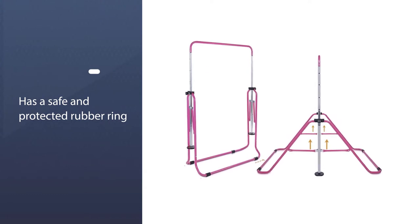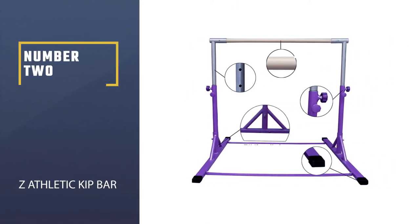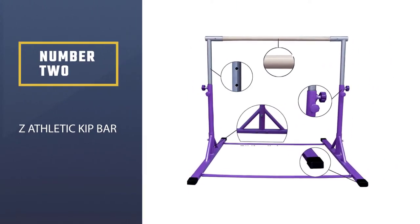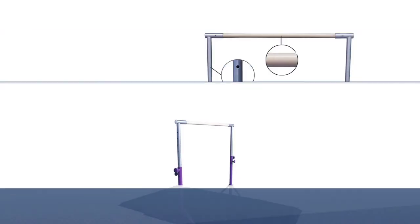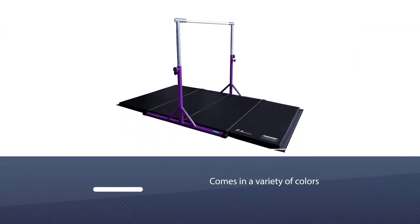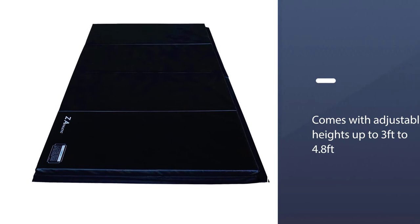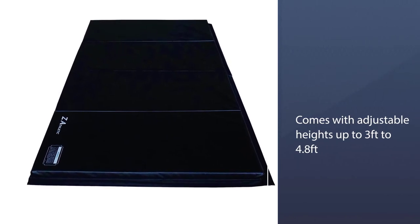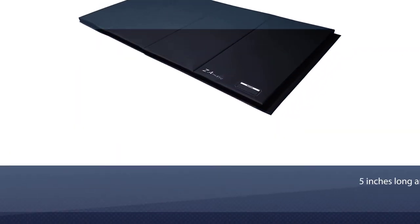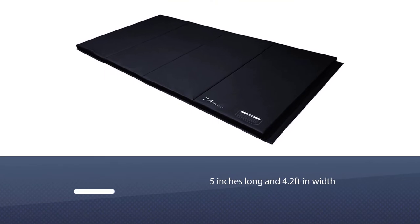Number two: Z Athletic Kip Bar. This gymnastic athletic expandable bar comes in a variety of colors. The gymnastic workout bar comes with adjustable heights up to 3 feet to 4.8 feet. It's 5 inches long and 4.2 feet in width. Z Athletic Bar is a foldable bar with two style options.